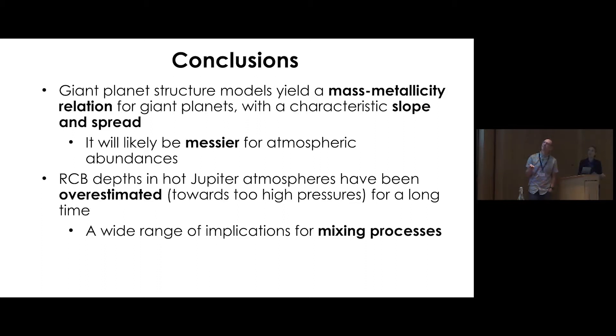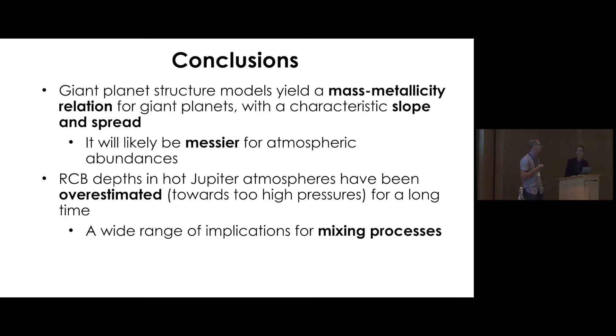To summarize: we should expect a mass-metallicity relation for giant planets, though it will be messier in terms of atmospheric abundances than for the actual interior structure. And we have new results on the radiative-convective boundary depth, which we think is much shallower than most people have suggested in the past. Thanks — I'll take questions.